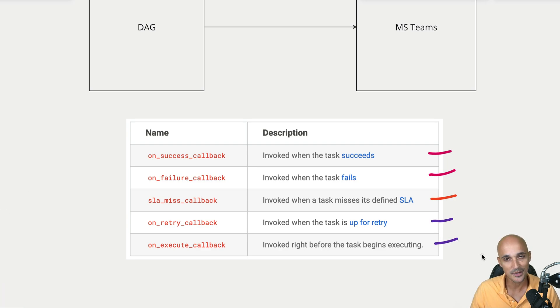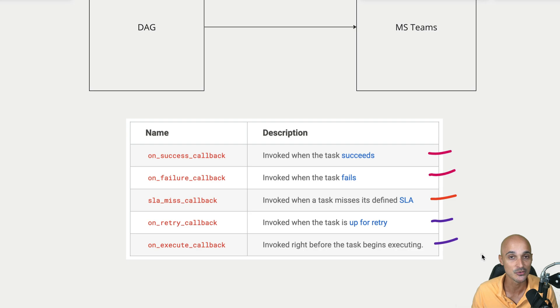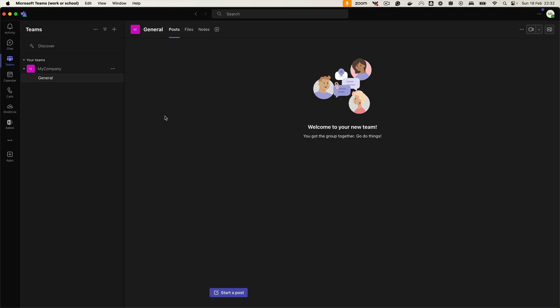Now that you know about the callbacks, it's time to see how to configure Microsoft Teams to receive notifications and then how to create the data pipeline to send those notifications. To follow along, you need to have a business account on Microsoft Teams, otherwise you won't be able to get the right interface and create your channel.